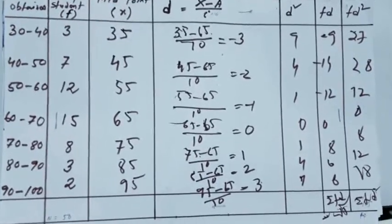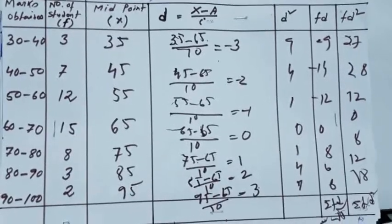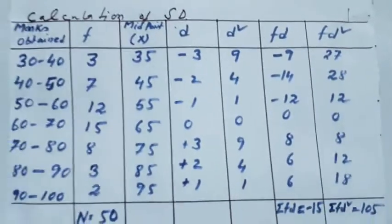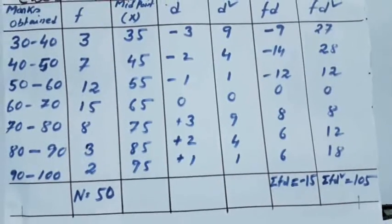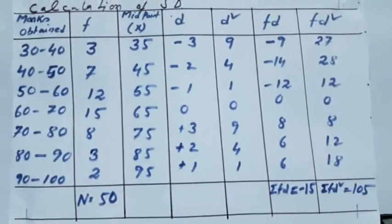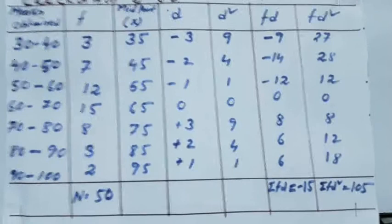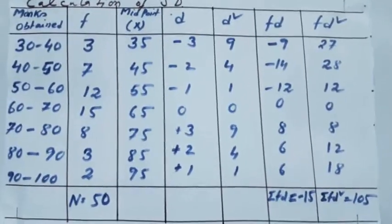Now, if we make a fresh table, it will look like this. Just from the last board work, you have seen how to calculate it, and if you put all this value clearly in your copy, the table would look like this.